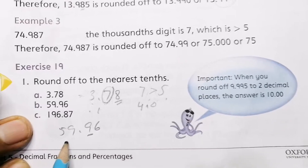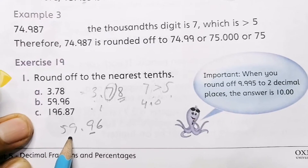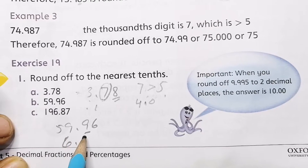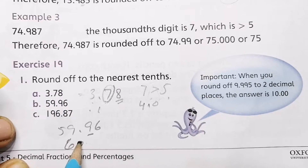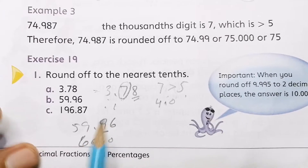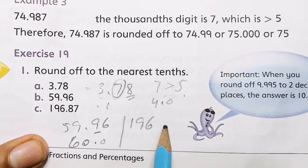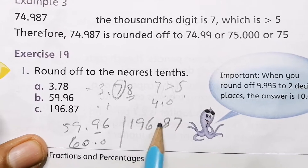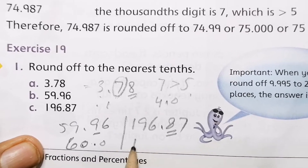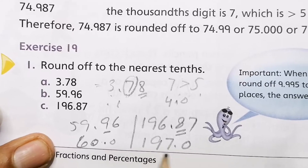For 59.96, the digit at the hundredth place is 6, which is greater than 5, so 9 rounds up. Since 9 becomes 10, the 59 becomes 60, and you write 60.0. For 196.87, the digit 8 is at the tenth place, so you write 197.0.